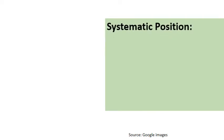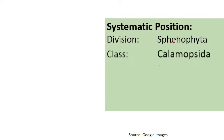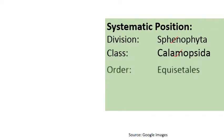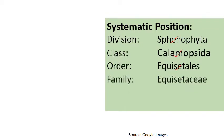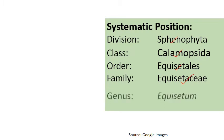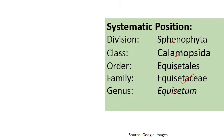The systematic position of Equisetum: it belongs to Division Sphenophyta, Class Calmoopsida, Order Equisitales, Family Equisitaceae, Genus Equisetum. There are four species present in India, among which Equisetum arvense is the most common.